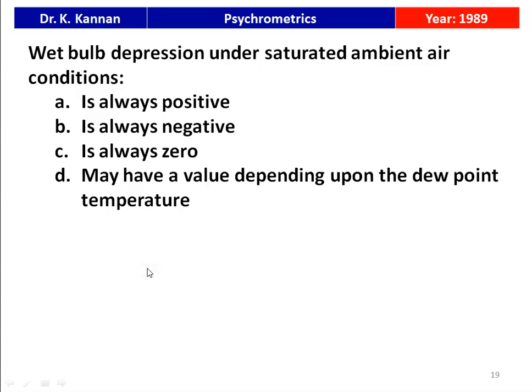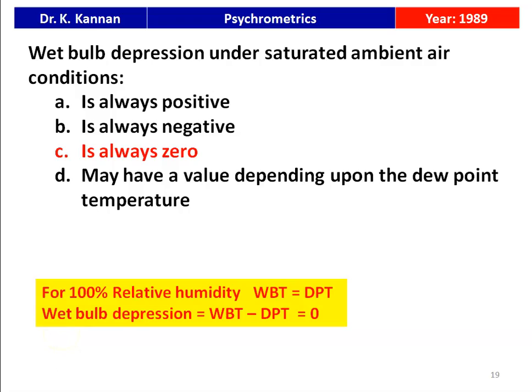The next question is from the 1989 question paper. Wet bulb depression under saturated ambient air conditions is always positive, always negative, always zero, or may vary depending on dew point temperature? The answer is always zero. For 100 percent relative humidity, wet bulb temperature equals dew point temperature (WBT = DPT). Wet bulb depression is defined as WBT minus DPT, which is always zero — so option C is correct.